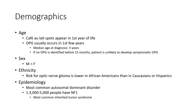Regarding demographic age: café au lait spots appear in the first year of life. Optic pathway glioma usually occurs in the first two years. Median age at diagnosis is around three years. If no optic glioma is identified before 15 months, the patient is unlikely to develop symptomatic optic pathway glioma. Risk for optic nerve glioma is lower in African Americans than in Caucasian or Hispanic patients.